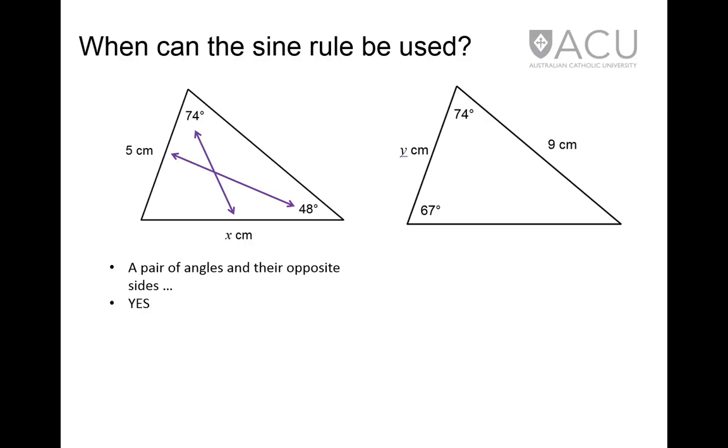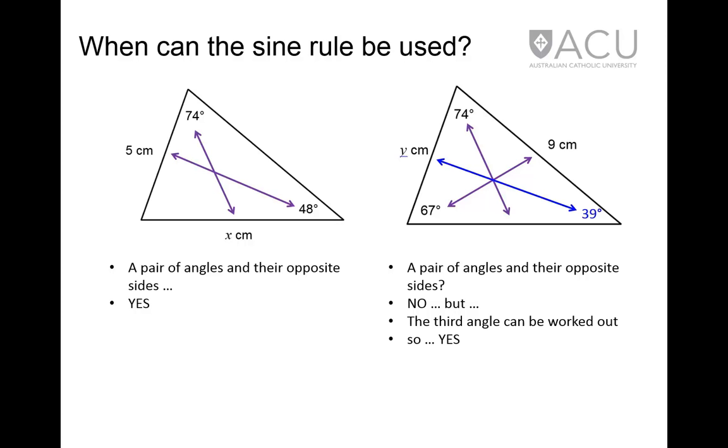In this one, there are two angles, a known side, but an unmarked side opposite one of the angles. So at first glance, it looks as though the sine rule can't be used. However, given that the sum of the angles in a triangle is 180 degrees, by subtracting the sum of the other two angles from 180 degrees, the third angle can be calculated to be 39 degrees. So now there is a known angle and the side opposite to be calculated, so the sine rule can be used to find y.